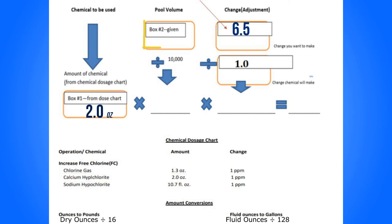Box number two is our volume. We have a 55,000 gallon pool, so that goes right there. Now we take 55,000 and divide it by 10,000.